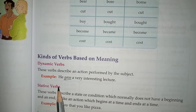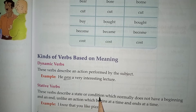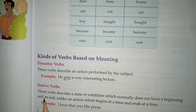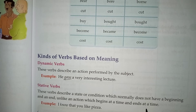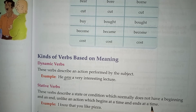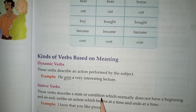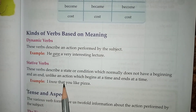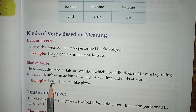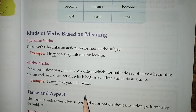Number two is static verbs. These verbs describe a state or condition which normally does not have a clear beginning and an end, unlike an action which begins and ends at a definite time. For example: 'I know that you like pizza.' We know the state exists, but we don't know exactly when we came to know it.